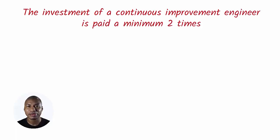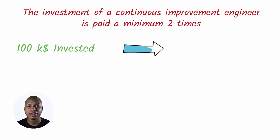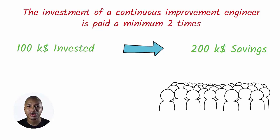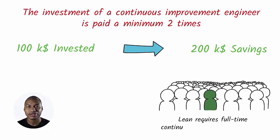For example, if the company spends $100,000 on a Continuous Improvement Engineer, the company can easily get savings of $200,000 just by selecting the right candidates, training them, and letting them work focused on one or two value streams. Do not believe that supervisors or line managers can do this work alone. Numerous companies have discovered that executing and supporting Lean requires full-time Continuous Improvement Engineers.